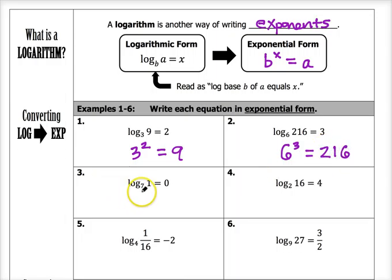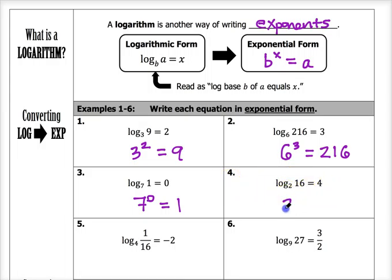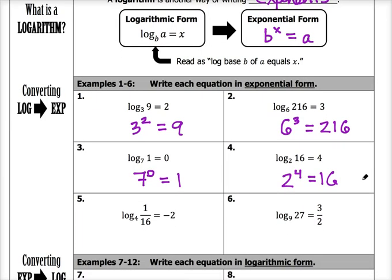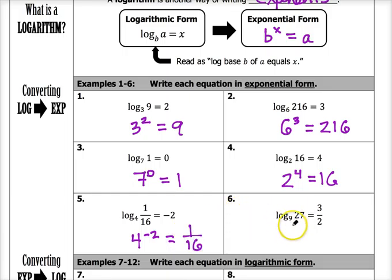Number three: log base 7 of 1 equals 0. In exponential form, that means 7 to the zero power equals 1. Number four: log base 2 of 16 equals 4 means that 2 to the fourth power equals 16. Number five: log base 4 of one-sixteenth equals negative 2, that's 4 to the negative 2 equals one-sixteenth. Number six: log base 9 of 27 equals three-halves, so 9 to the three-halves power equals 27.